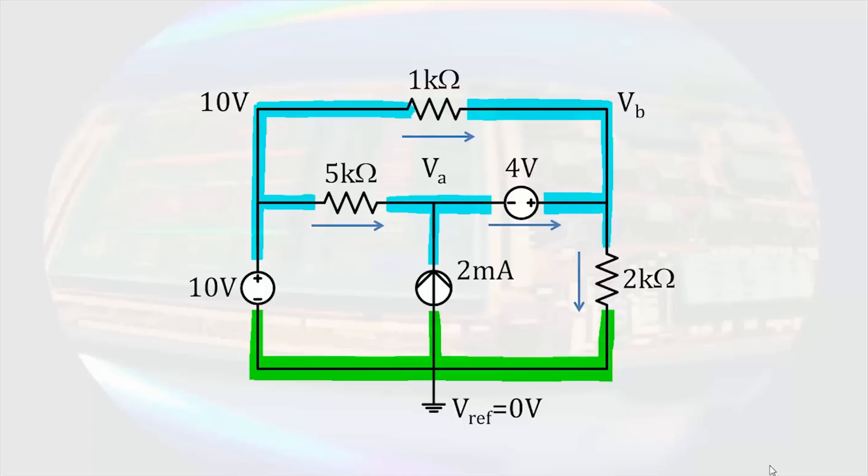The current through a voltage source has no mathematical relationship or physical law that will help us determine its value. However, we know there will be a current through the source. All we can do at this point is assign the current a variable and deal with it like any other current. If we call it IS, we can go ahead and write node equations at nodes A and B.